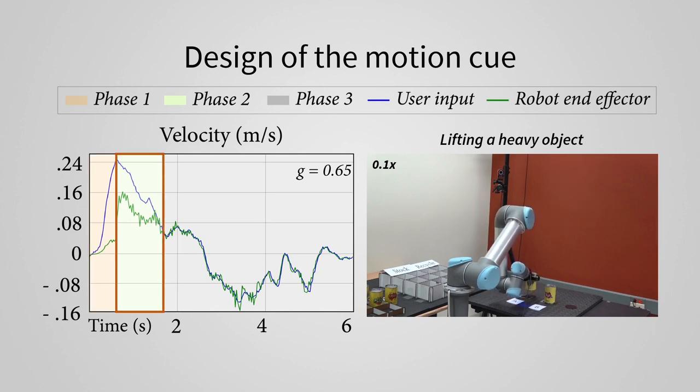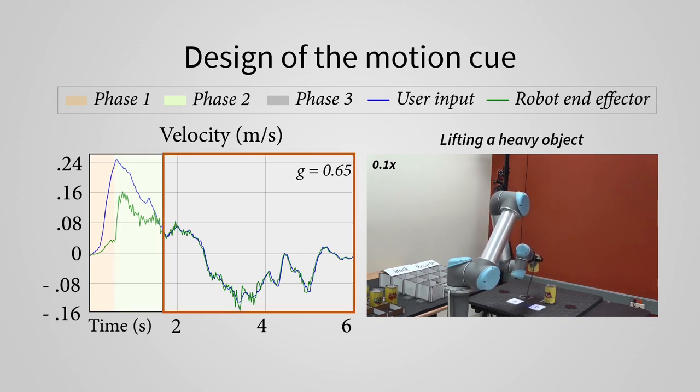In phase 2, the robot moves faster than in phase 1, but still less than the user input. This corresponds to a lower lift velocity. In phase 3, the motion cue switches off, and the robot is in regular teleoperation mode.